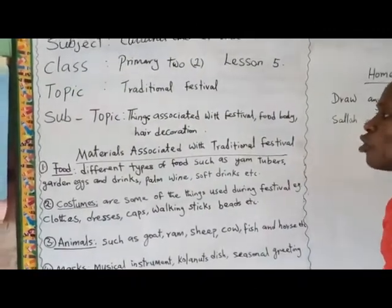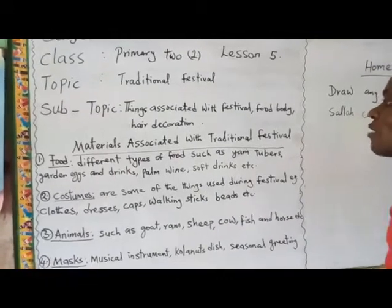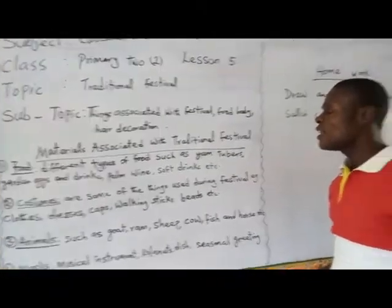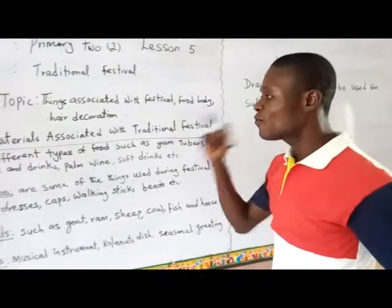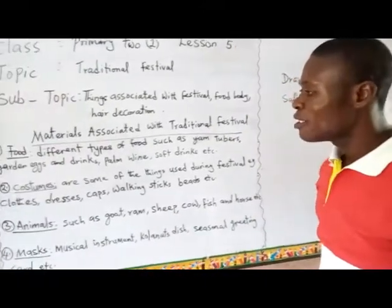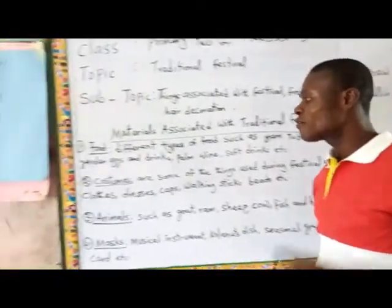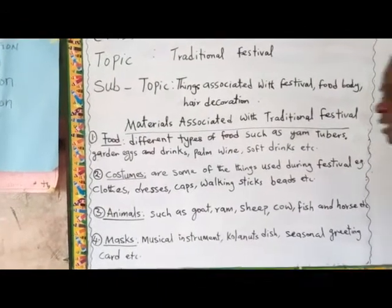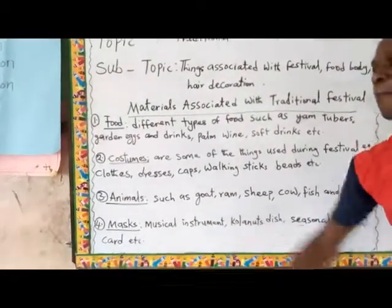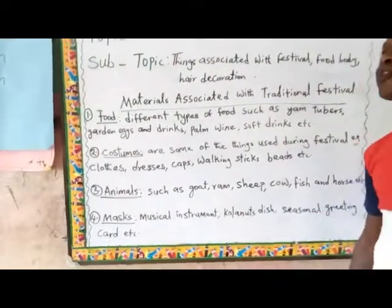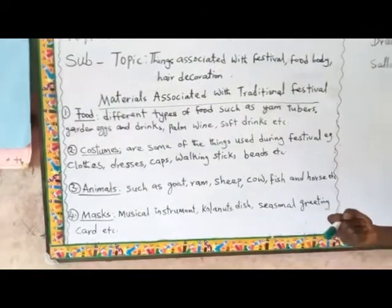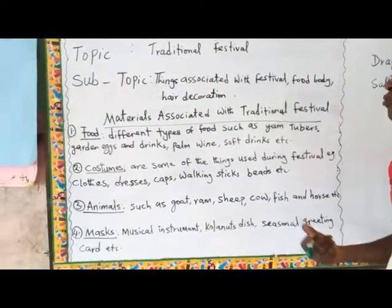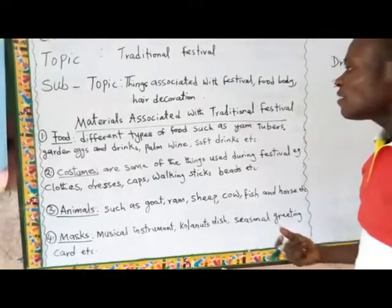Now we are going to look at some of those materials associated with traditional festival. Number one is food; number two, we have costume; number three, we have animal; and number four, we have mask. So those are the things associated with festival.